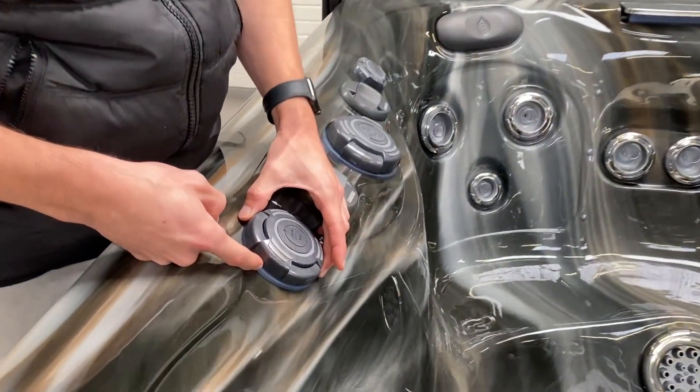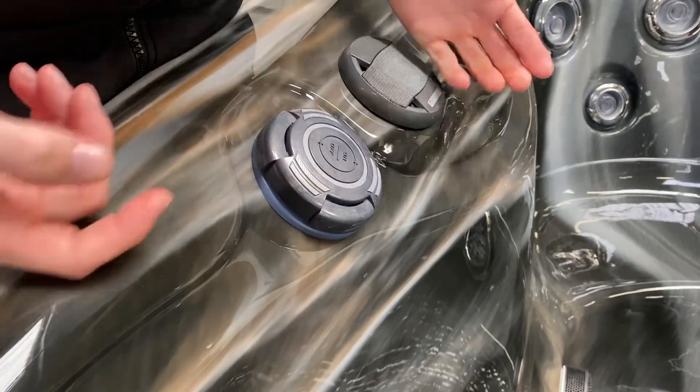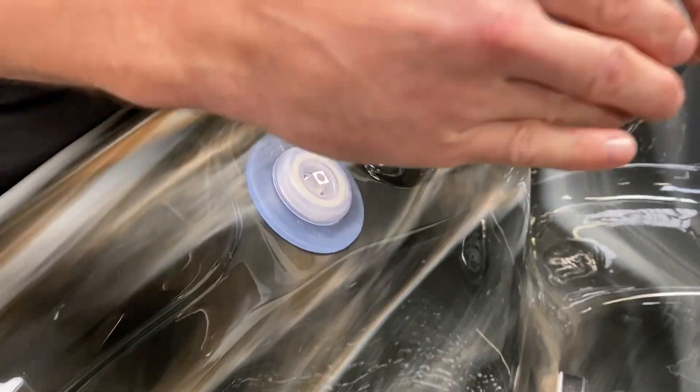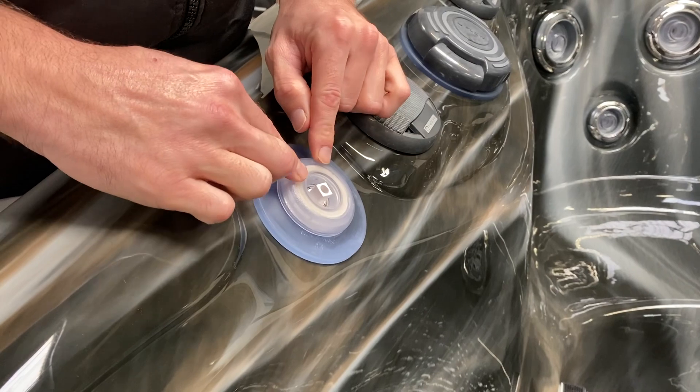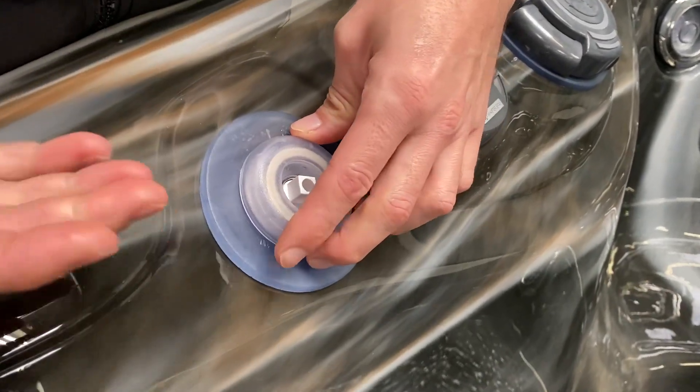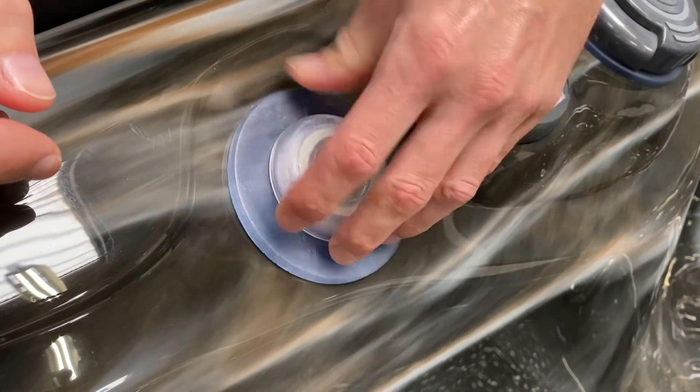Sometimes you might find that these leak slightly because the inner piece will come loose. First of all, we've got to pull the cap off and we just need to tighten this up. But in case it has come apart, I'm just going to show you how to put it back together.